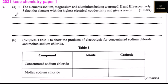The element that has the highest electrical conductivity is aluminum. The reason being, aluminum has 3 delocalized electrons, while sodium and magnesium have 1 and 2 respectively. Thus, aluminum has more electrons that can move and carry charge.